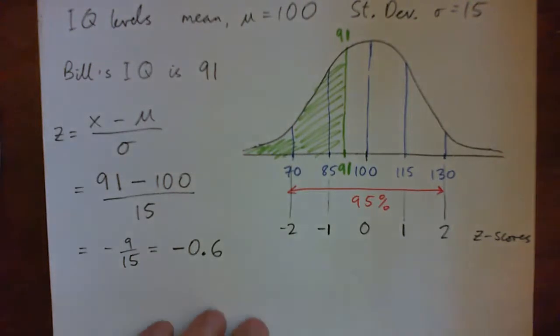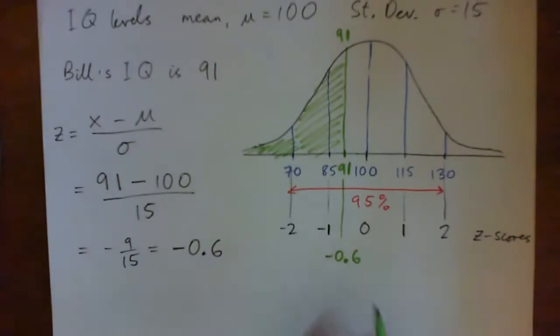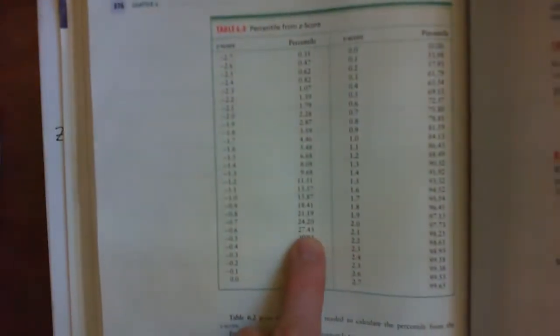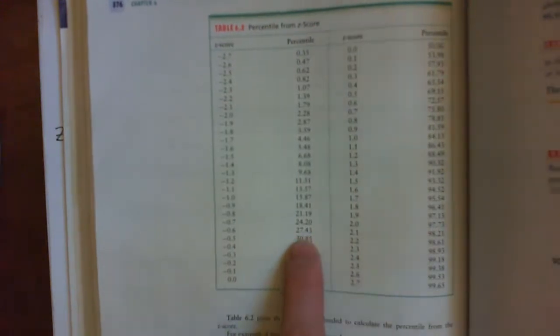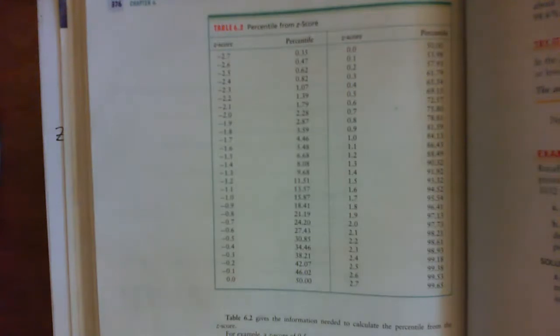All right. So 91 is, we find 91 to be negative 0.6 because it's 0.6 standard deviations below the mean. And when we look up the table, we get, we look across, we see this funny percentage which says 27.43, which is kind of a little annoying. And I want to show that clearer. Here's, if you can see this table a little clearer, right? So negative 0.6 corresponds to 27.43, right?